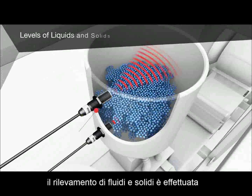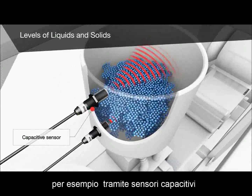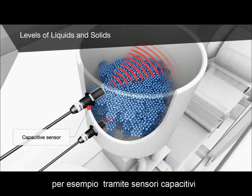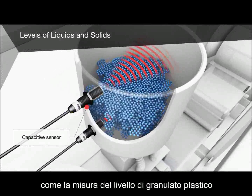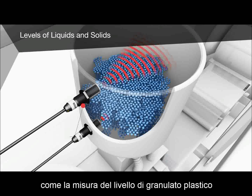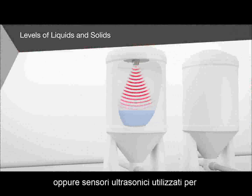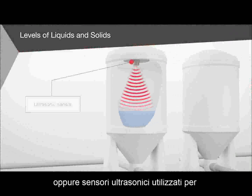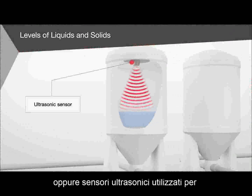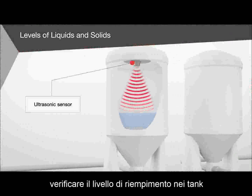Detection of fluid and solid levels is performed, for example, by capacitive sensors, such as point level monitoring of plastic granulate, or ultrasonic sensors used here to check the fill height in tanks.